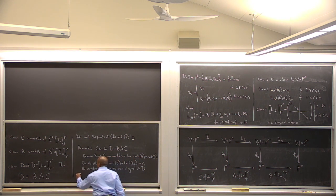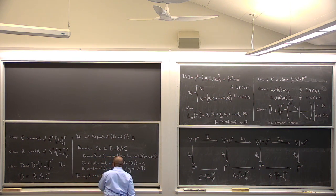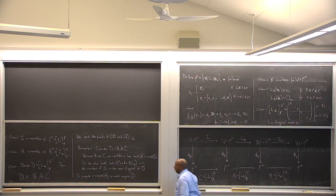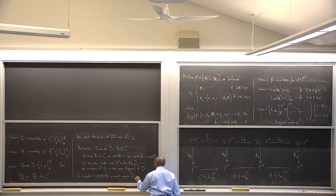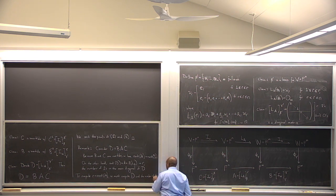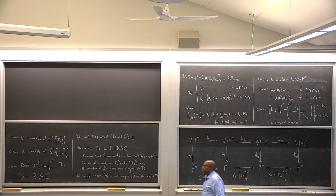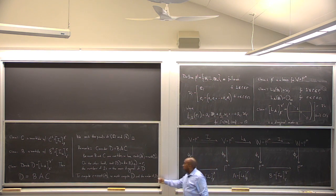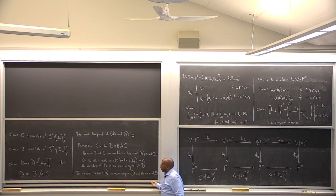So to compute the rank r, we must compute D and count the number of ones. We need to figure out how to compute this matrix D — that is, compute these clever bases beta prime and gamma prime, then just count the number of ones, and that will tell us the rank of A. We'll come back to that.